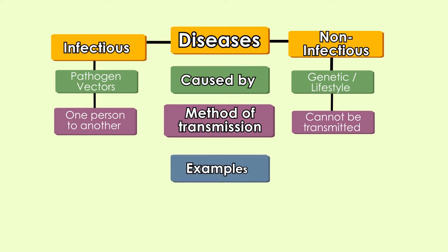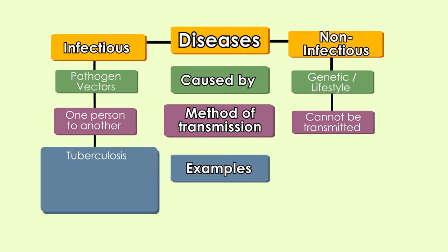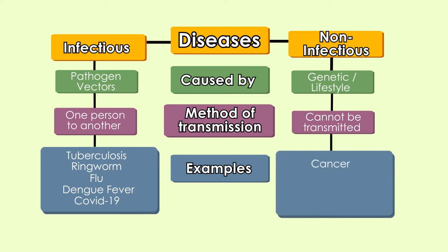The examples of infectious diseases are tuberculosis, ringworm, flu, dengue fever, and of course, COVID-19. Some examples of non-infectious diseases are cancer, asthma, diabetes, and hypertension.